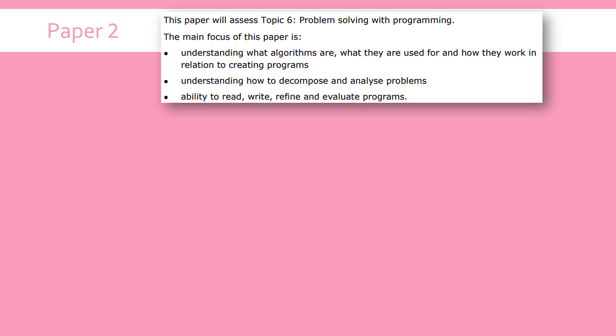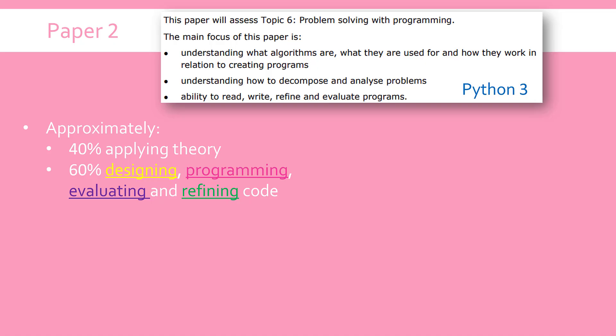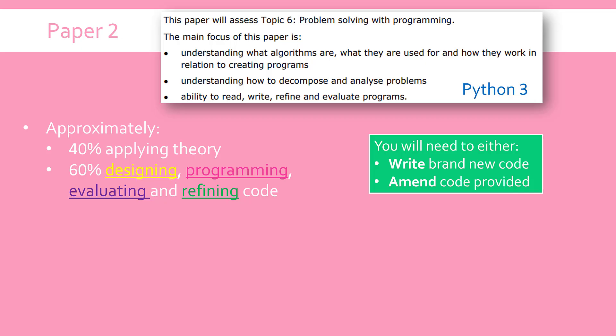Topic 6 has got a fair few subtopics but a lot of them are actually from Paper 1 as well. When you are asked to actually write code, it's going to be in Python version 3 — the latest version of Python is assessed in this paper, not any other language. Unlike Paper 1 which has recollection of theory, this time it is just applying the theory when you are programming, as well as these four buzzwords used across all computer science specifications: designing, programming, evaluating, and refining. These four words are just encompassed in writing code in the exam.